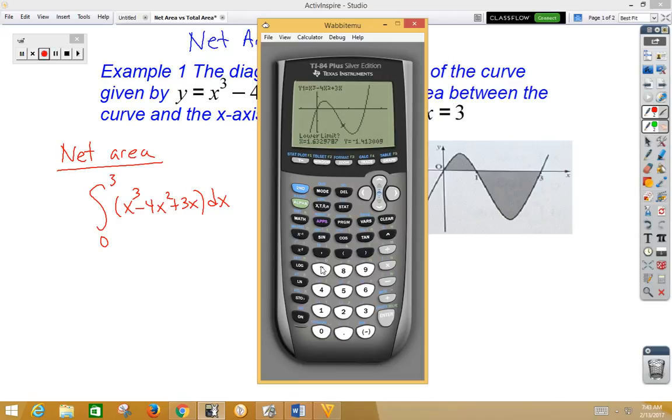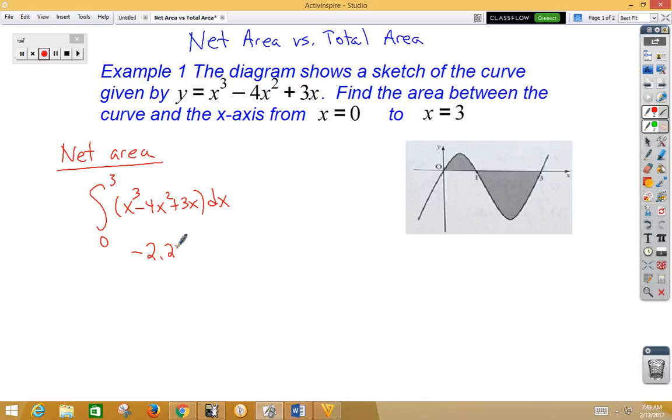Our lower limit is 0, so 0, enter. Our upper limit is 3, so 3, enter. And it will shade under the curve and give us an answer, in this case, negative 2.25.